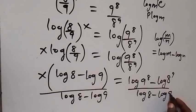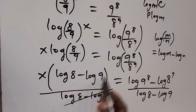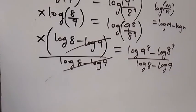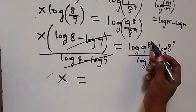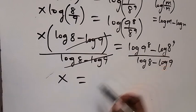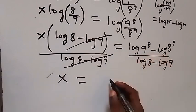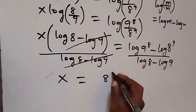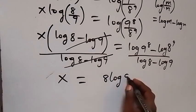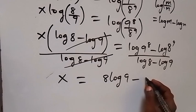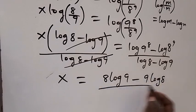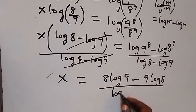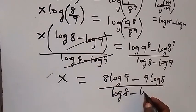Dividing both sides by log 8 minus log 9, these cancel each other on the left side, so what we have left is x equals to log 9 raised to power 8 minus log 8 raised to power 9, then divided by log 8 minus log 9. We can simplify this further.